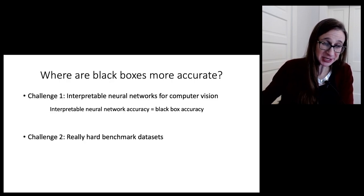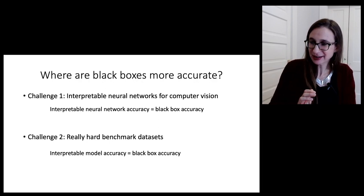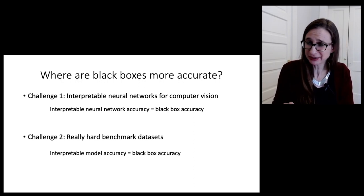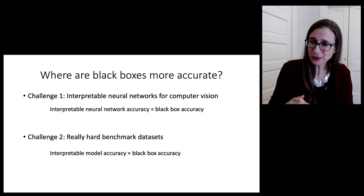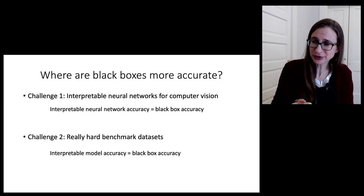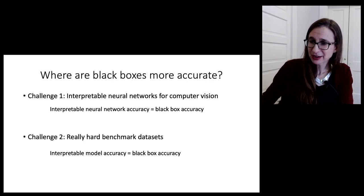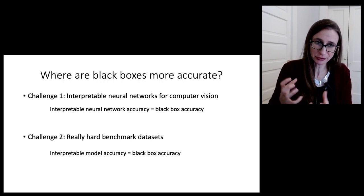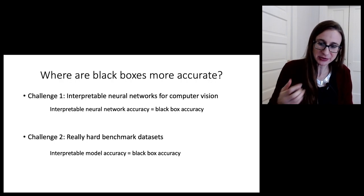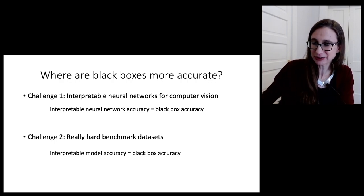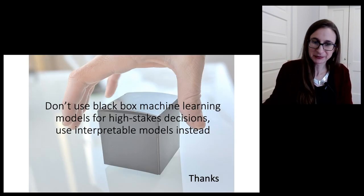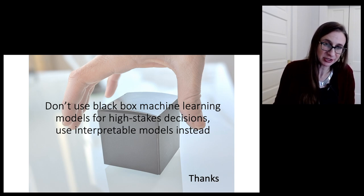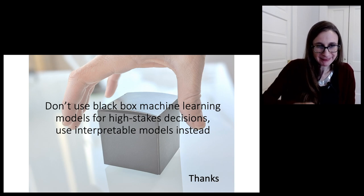In both of these cases, we haven't really found any cases where black boxes are more accurate. There's really no scientific evidence that there's an accuracy-interpretability trade-off at all. It doesn't seem that you really need to sacrifice predictive performance for interpretability, as long as you're really good at optimization — as long as you can optimize for interpretability in addition to accuracy. That's why I keep saying we should really not use black box machine learning models for high stakes decisions, and we should use interpretable models instead. Thank you.